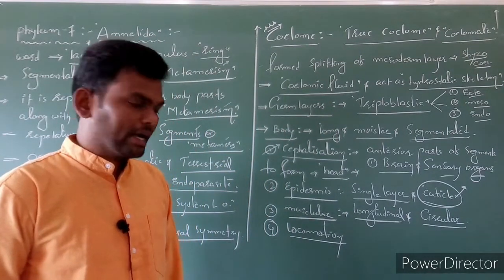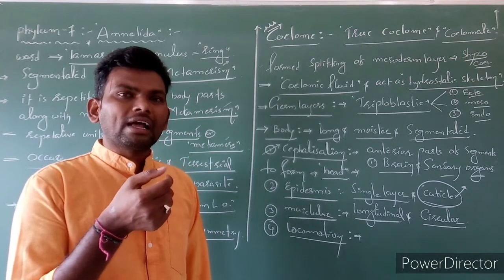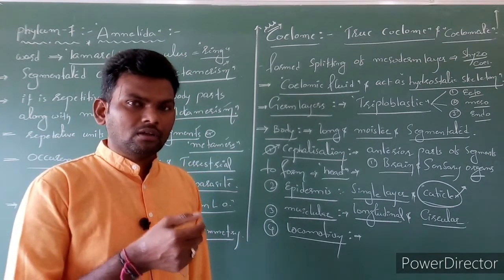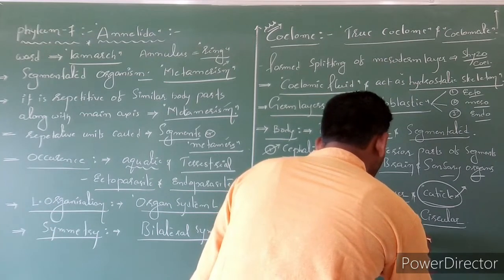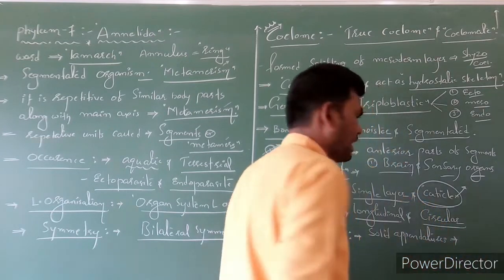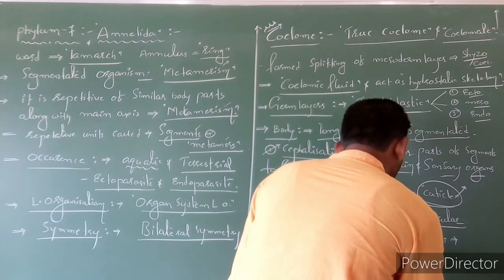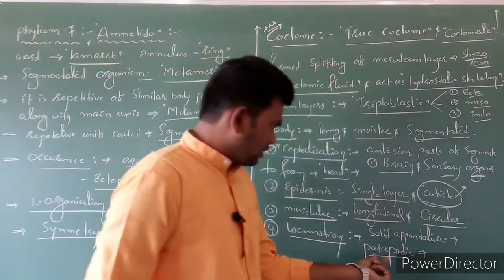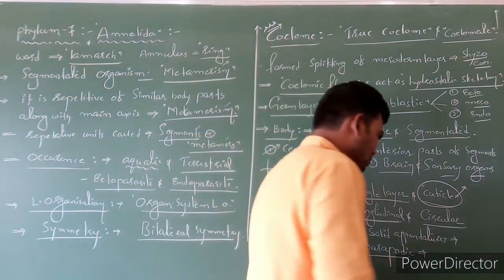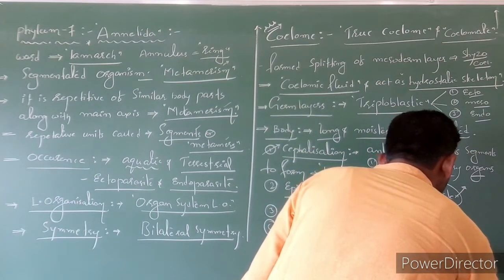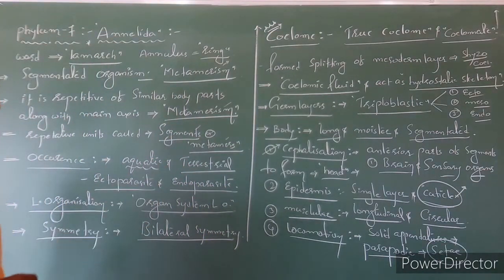Regarding locomotion, from each segment solid appendages are formed, called parapodia. Parapodia are solid organs arising from each segment of an Annelida member. These are the locomotory organs of Annelida.